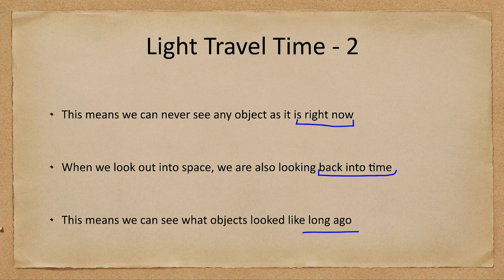We never see anything exactly as it is right now — we never see that object as it is at this instant. This is important because we are also looking back into time when we look out into space, which is a good thing in that we can see what objects looked like a long time ago. When we talk about galaxies, we can see what they looked like 10 to 12 billion years ago at the very early history of the universe, simply because their light has taken that long to reach us.